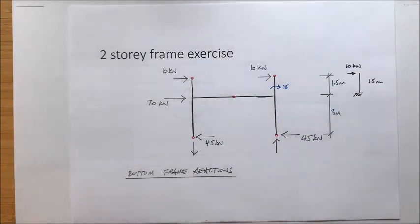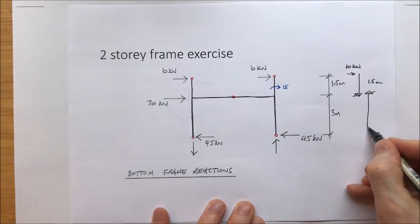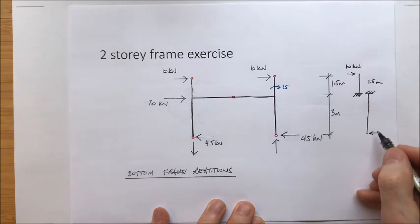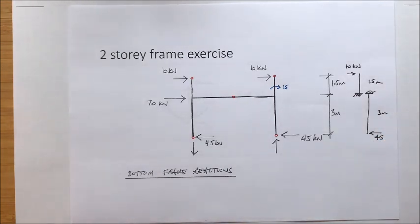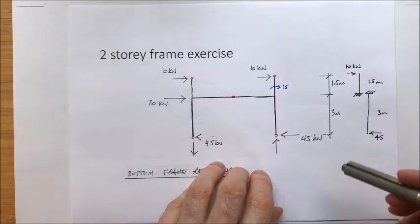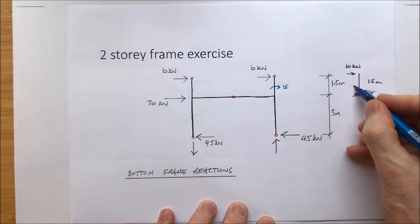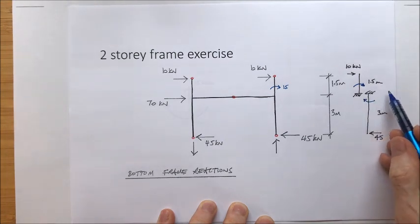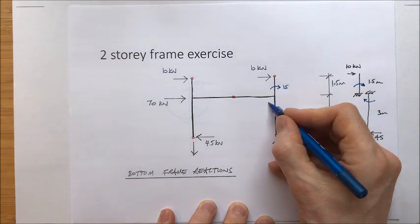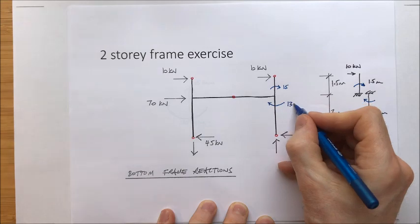How about at the bottom? This column here, we can model again as a fixed end with a load applied of 45 kilonewtons over a height of 3 meters. So we can work out the bending moment there, 3 times 45, which is 135 kilonewton meters. This force is tending to create a bending moment that way. This is tending to create a bending moment in the same sense, clockwise. So this has got a bending moment here of 135 kilonewton meters.